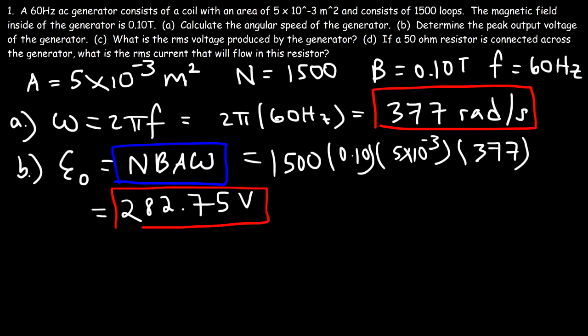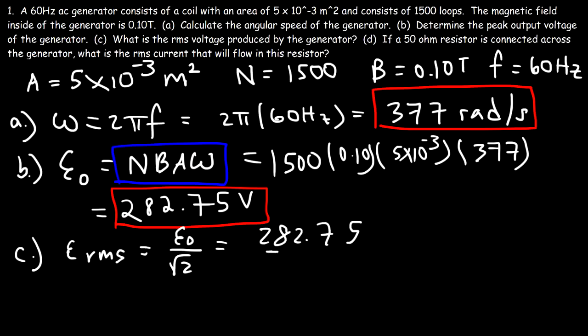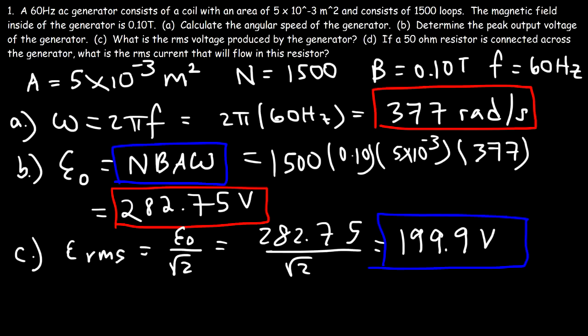That's the peak output of this AC generator. For part C, the RMS voltage equals the peak voltage divided by the square root of 2. So it's 282.75 divided by √2, which comes out to approximately 199.9 volts.